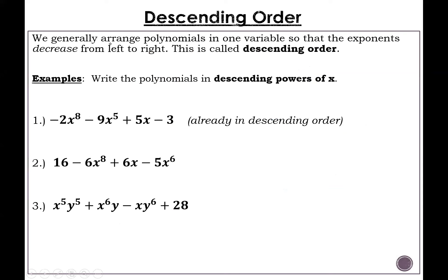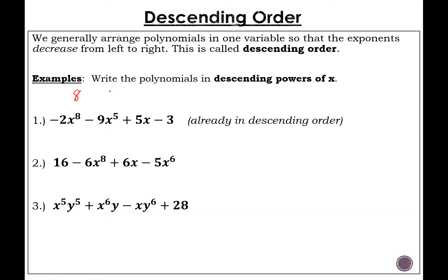We generally arrange polynomials in one variable so that the exponents decrease from left to right — this is called descending order. To descend is to go down. Here are some examples: write the polynomials in descending powers of x. Number one, negative 2x to the eighth minus x to the fifth plus 5x minus 3, is already in descending order. The degrees are 8, 5, 1, 0 — highest to lowest. We don't need to rewrite that one.